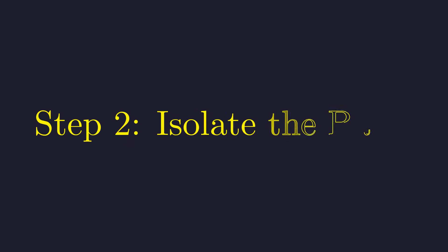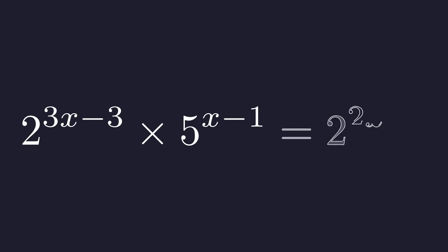Our strategy now is to gather all terms with the same base on the same side of the equation. To group the terms with base 2, we'll divide both sides by 2 to the power of 3x minus 3.